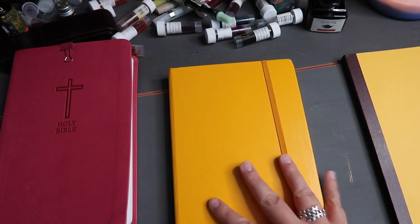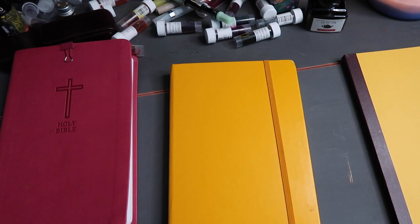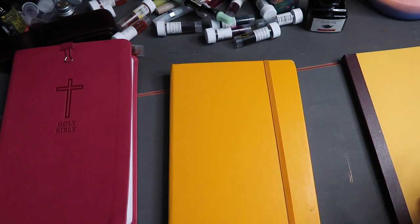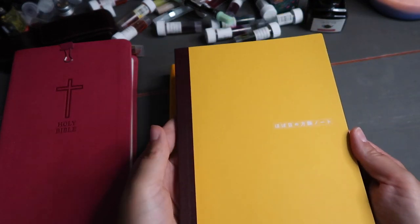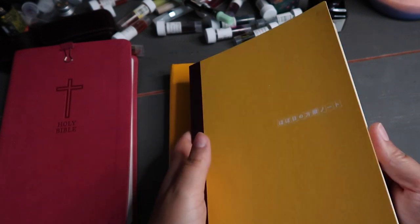This Leuchtturm 1917 notebook is the notebook that I use on an everyday basis. I take it to church, I do sermon notes, Bible study notes, quick little journal entries which are mainly prayers, and then I also use it for recipes, workouts, to-do lists, checklists, things of that nature.